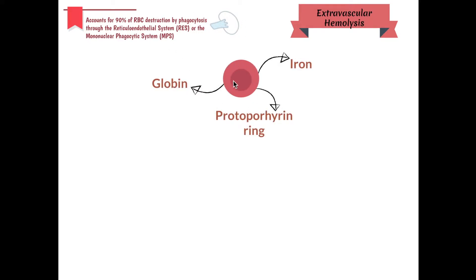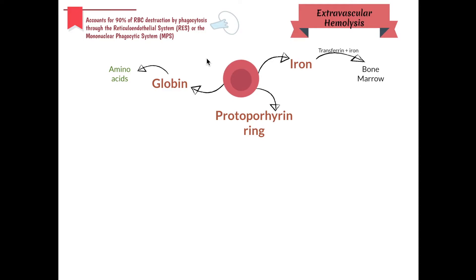The hemoglobin in the RBC splits into the iron, the protoporphyrin ring, and the globin chains. That's what happens during destruction. The globin chains then go into your amino acid pool — they just get reabsorbed and wait to be recycled for something else.